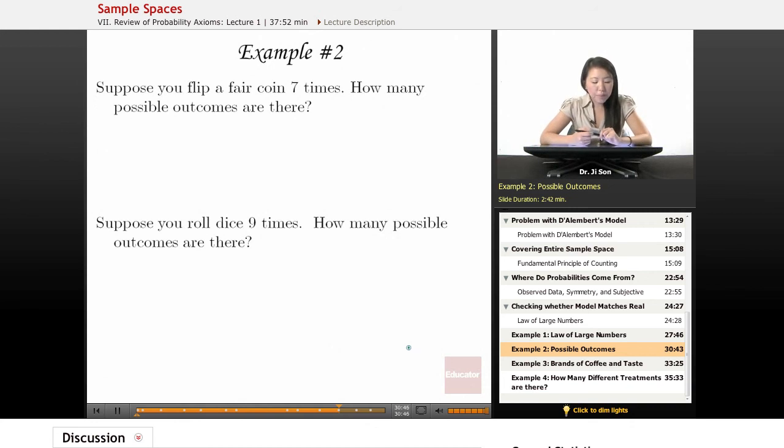So example two. Suppose you flip a fair coin seven times. How many possible outcomes are there? Thankfully it doesn't say list all of them, it just says how many possible outcomes. Think of each coin flip as a slot where one of two things can happen: heads or tails.